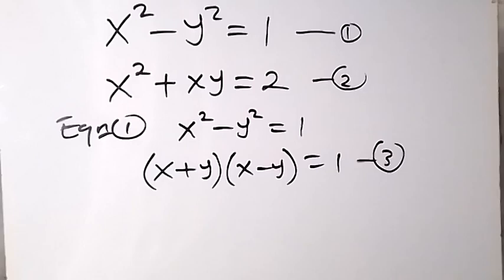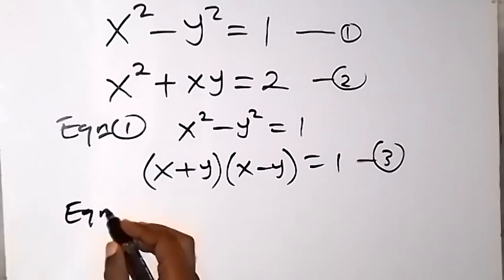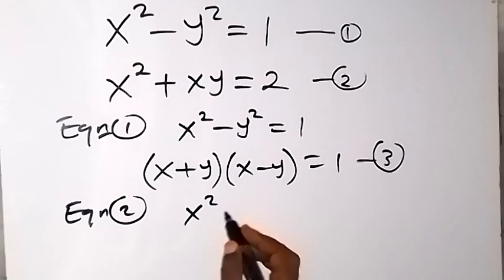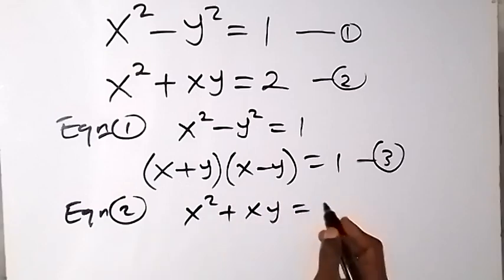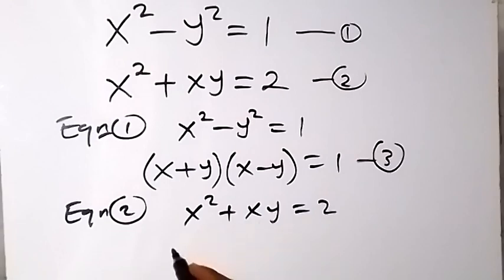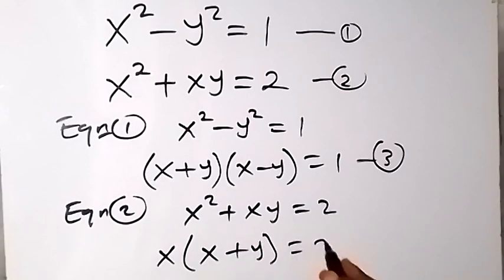And also from equation 2, we have x squared plus xy equals to 2. From here, we can factor x out on the left hand side, so we have x times the bracket x plus y, which equals to 2. Let's call this equation 4.